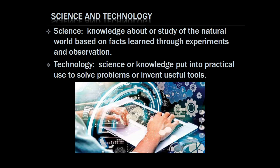Science is a knowledge about or study of the natural world based on facts learned through experiments and observations — the two key words being experiment and observations. Technology, on the other hand, is science or knowledge put into practical use to solve problems or invent useful tools. So the invention of the internet, the cell phone, even something as simple as a ballpen, is already a technology.